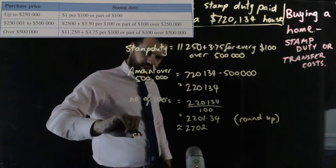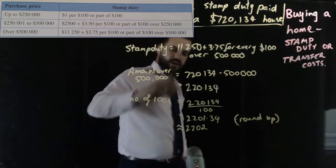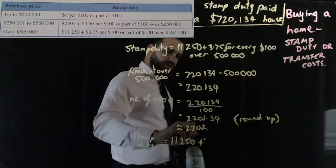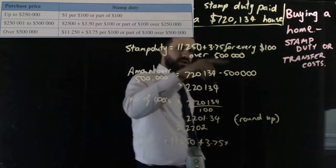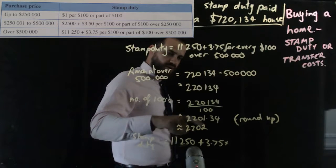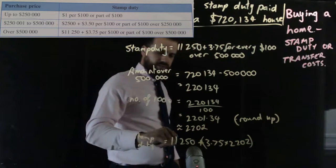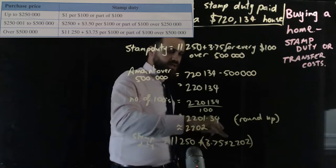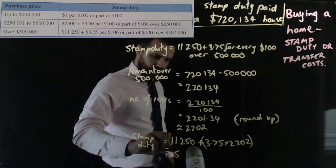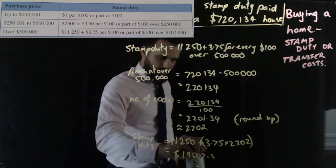For the final step, stamp duty equals eleven thousand two hundred and fifty, plus three dollars seventy-five times two thousand two hundred and two. That gives us a stamp duty amount of nineteen thousand five hundred and seven dollars and fifty cents.